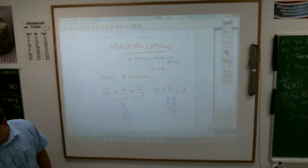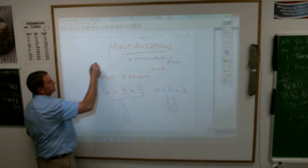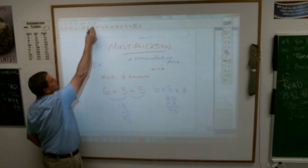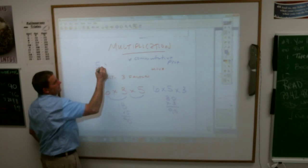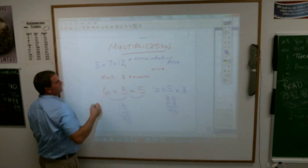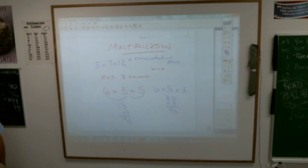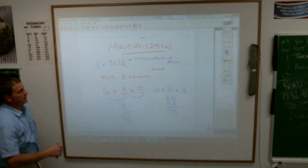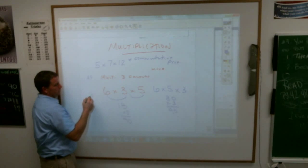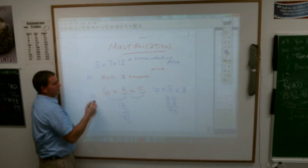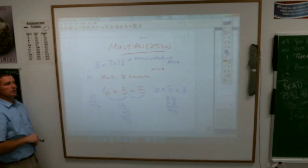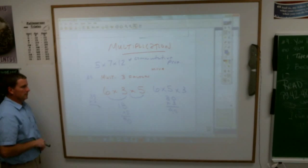How about five times seven times twelve? Now this one you might not even be able to do without moving around, because if you did this the way it stands, you'd have to multiply thirty-five times twelve. And we haven't done double-digit multiplication yet. So, what number would you move to go where, would you think? Kyla?